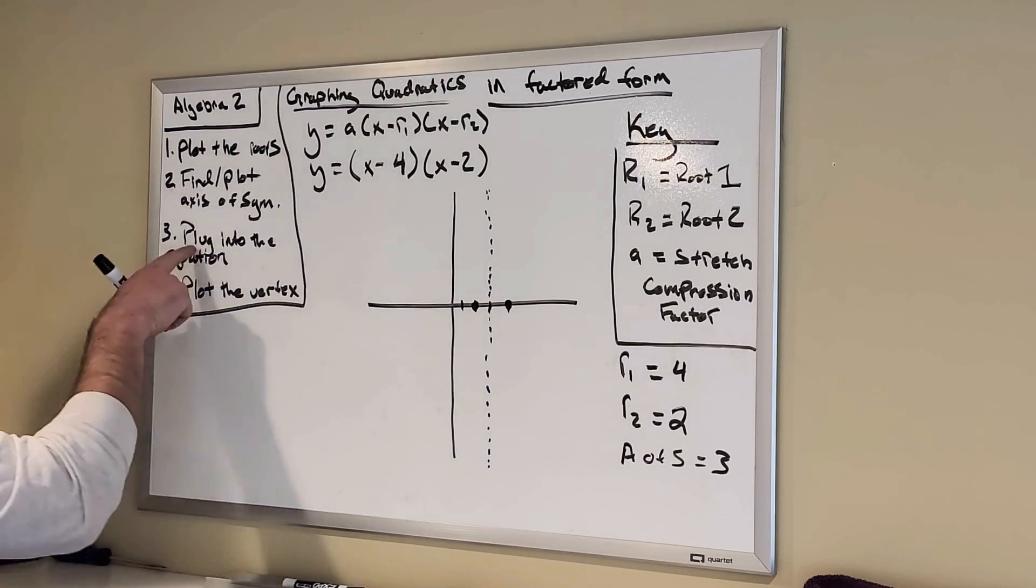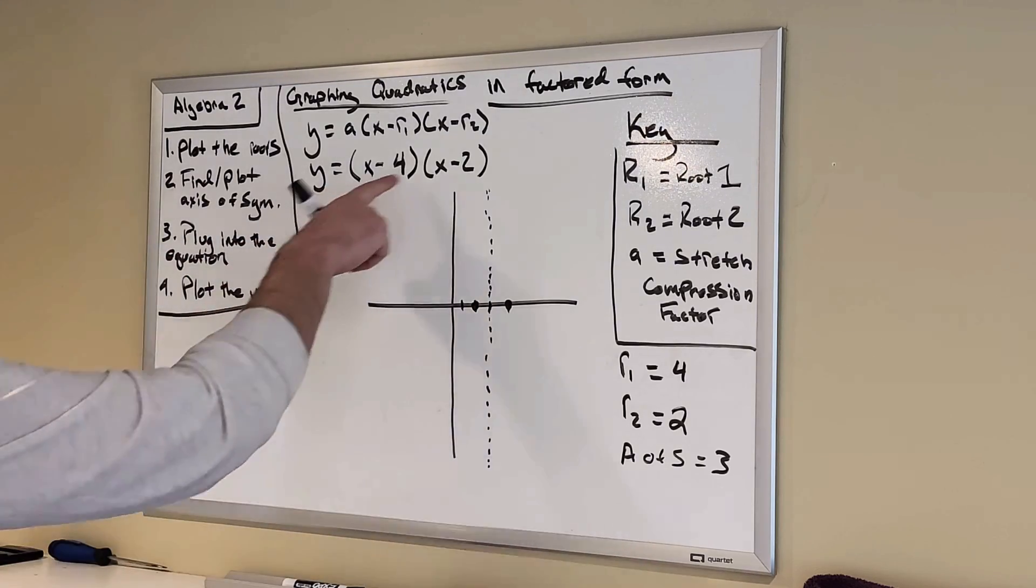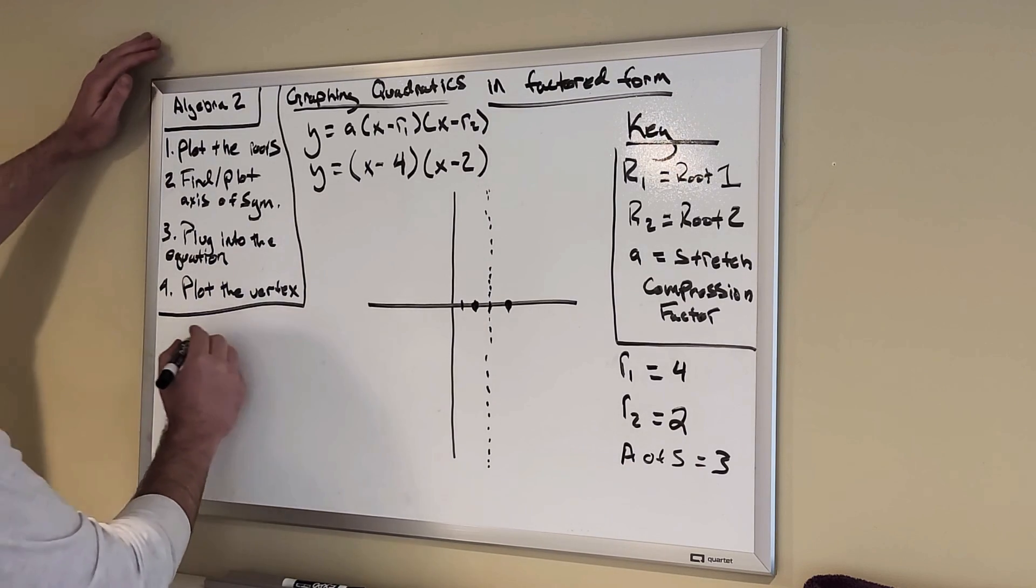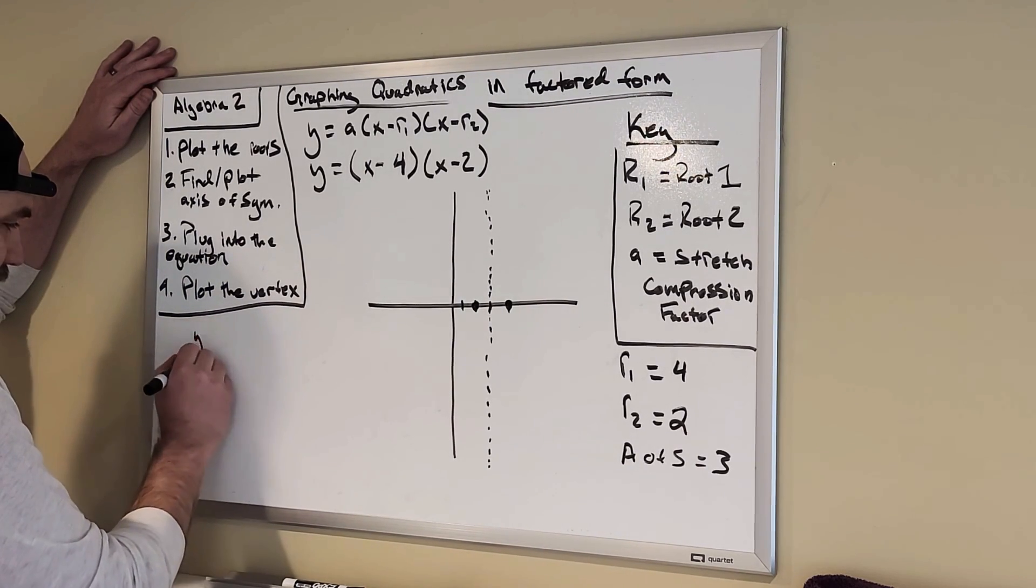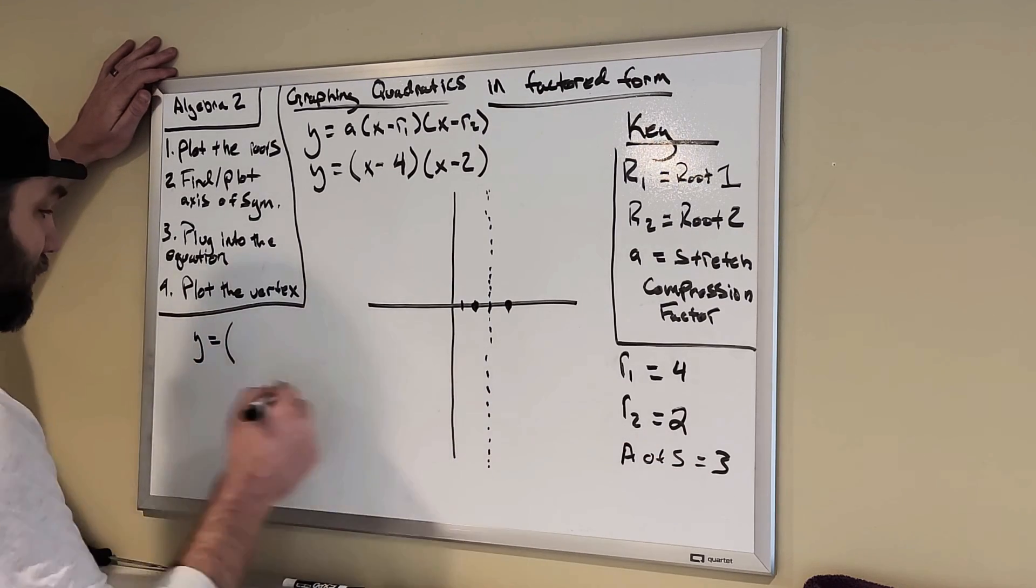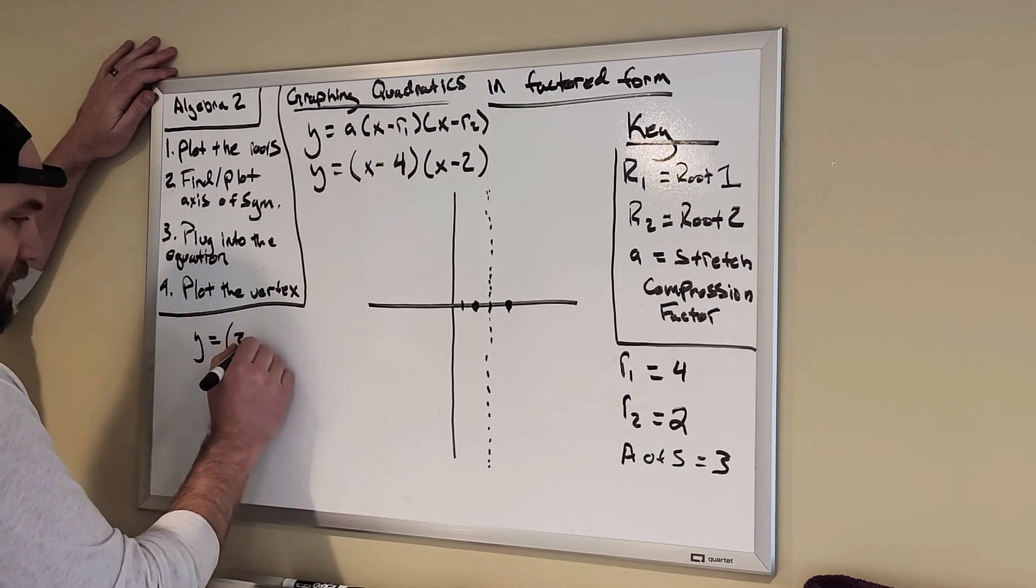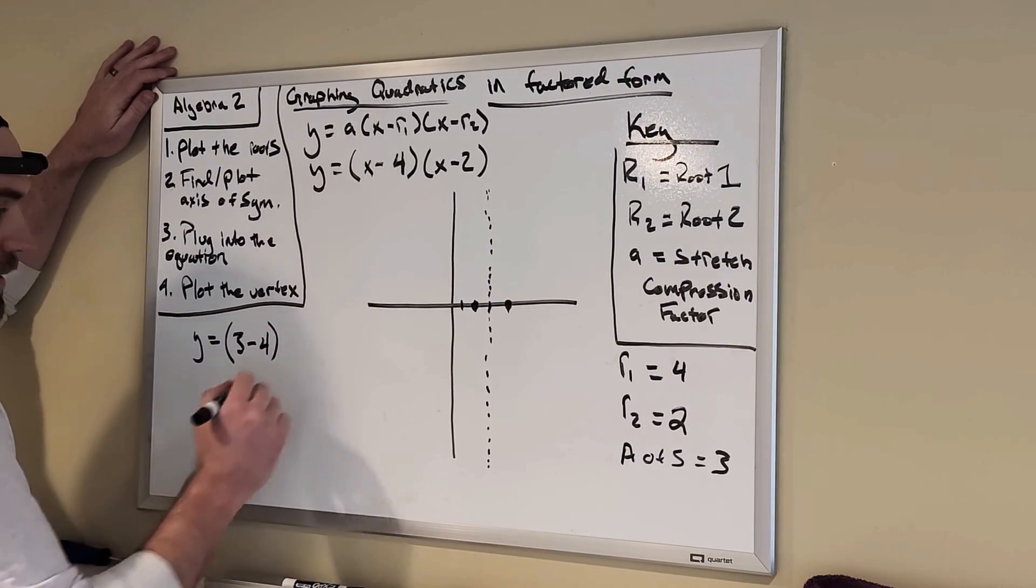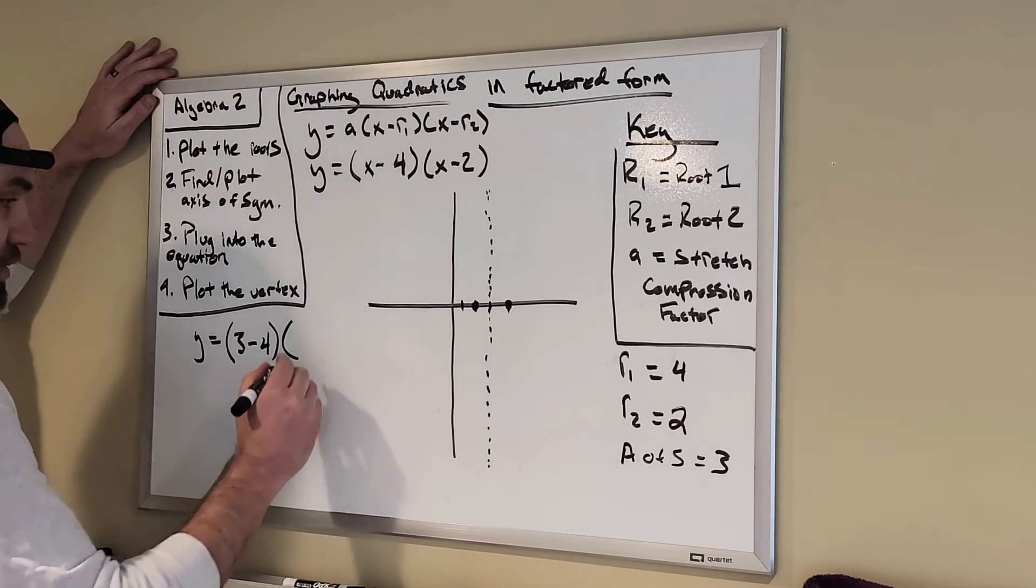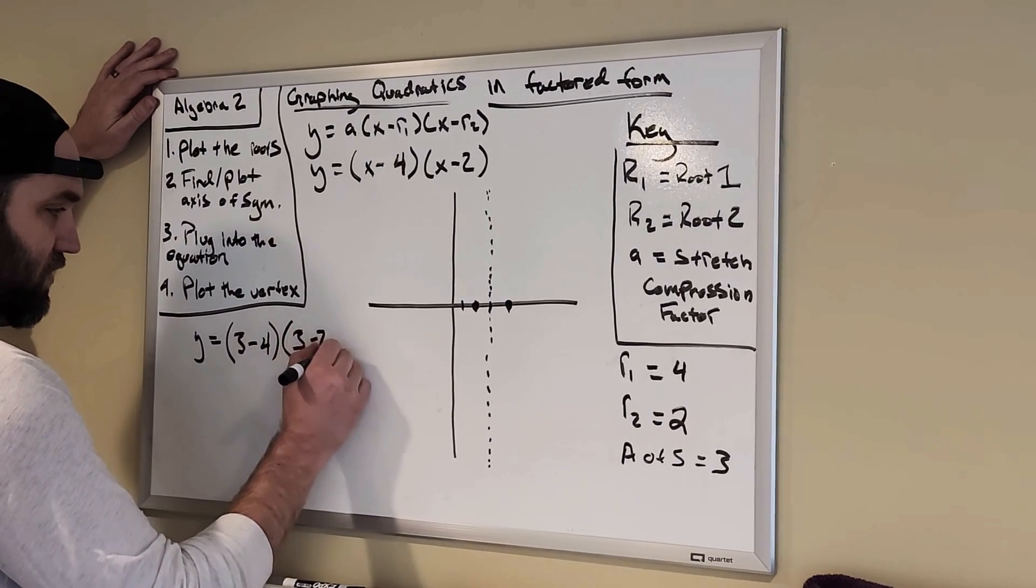Now, I'm going to plug that axis of symmetry in for my x value into the equation. So, I'm going to write it over here. y equals x. Instead of x, I'm going to use that 3 value. That axis of symmetry value, 3 minus 4, put parentheses around it, times. Again, use that axis of symmetry value, 3 minus 2.